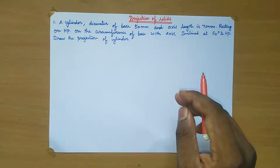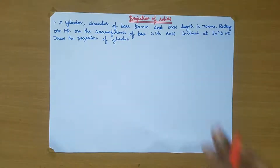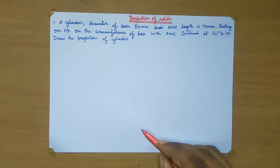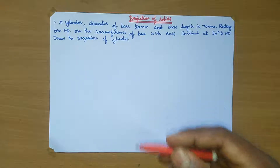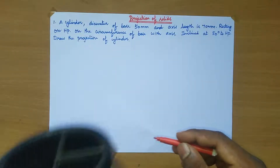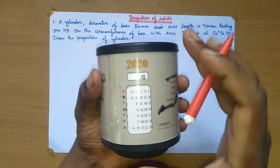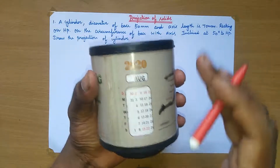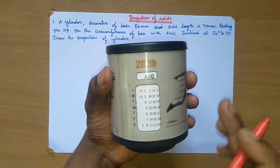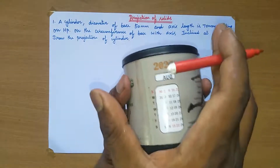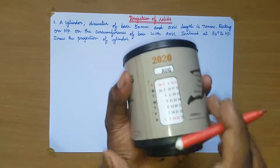Before going to draw this projection of solid, in this type of solid model you get a cylinder. For a cylinder solid model, we are going to get a front view section and top view section. If you look at the front view section, it is a rectangular image.